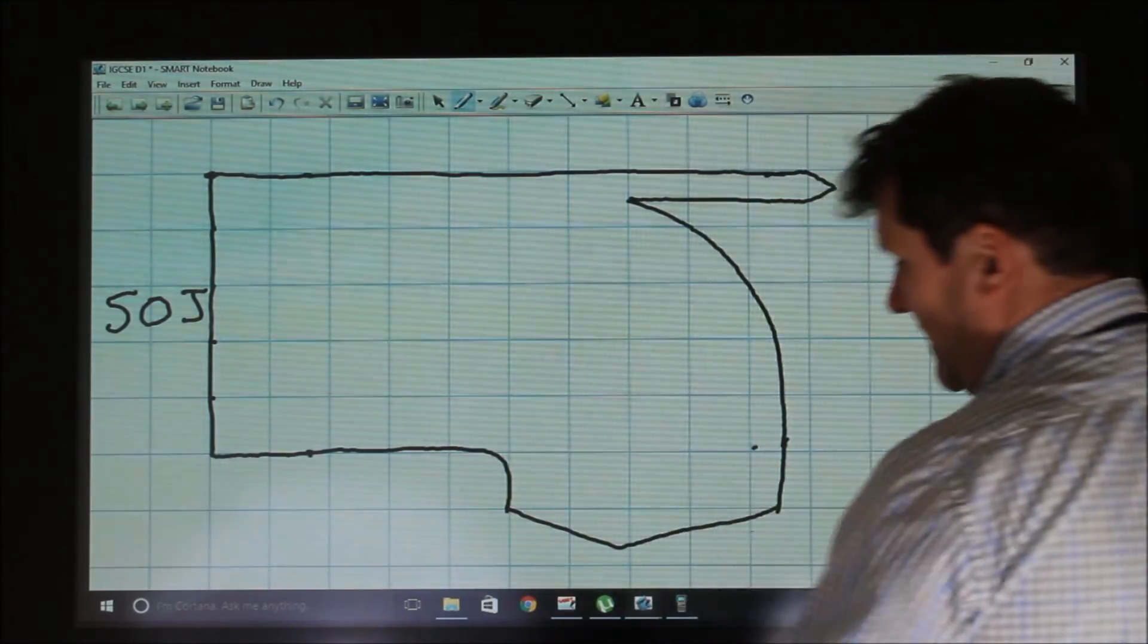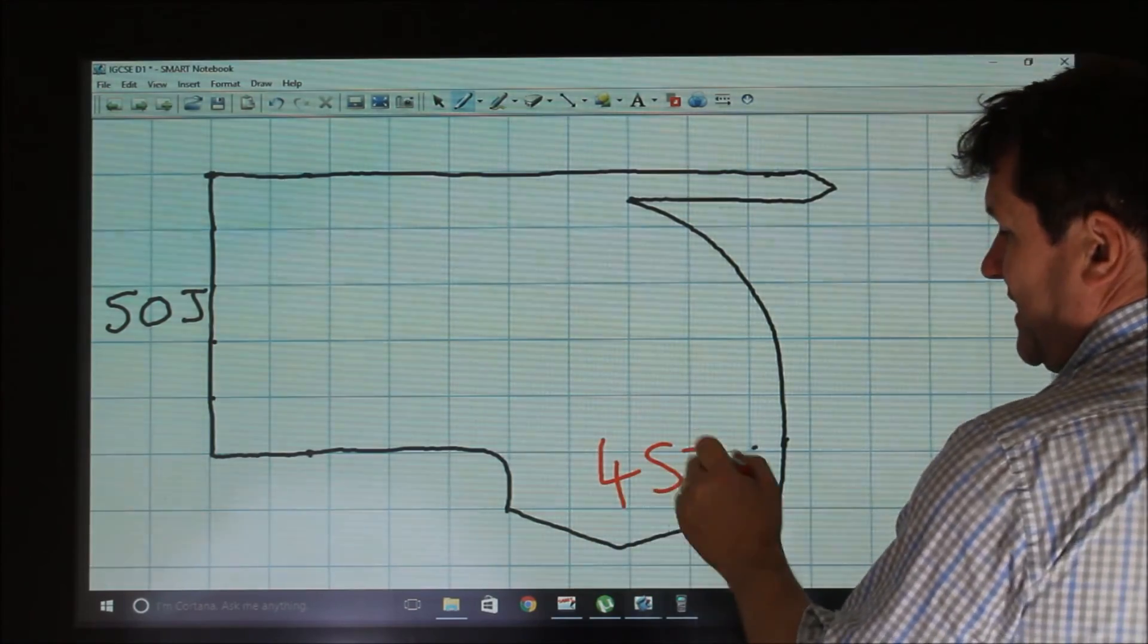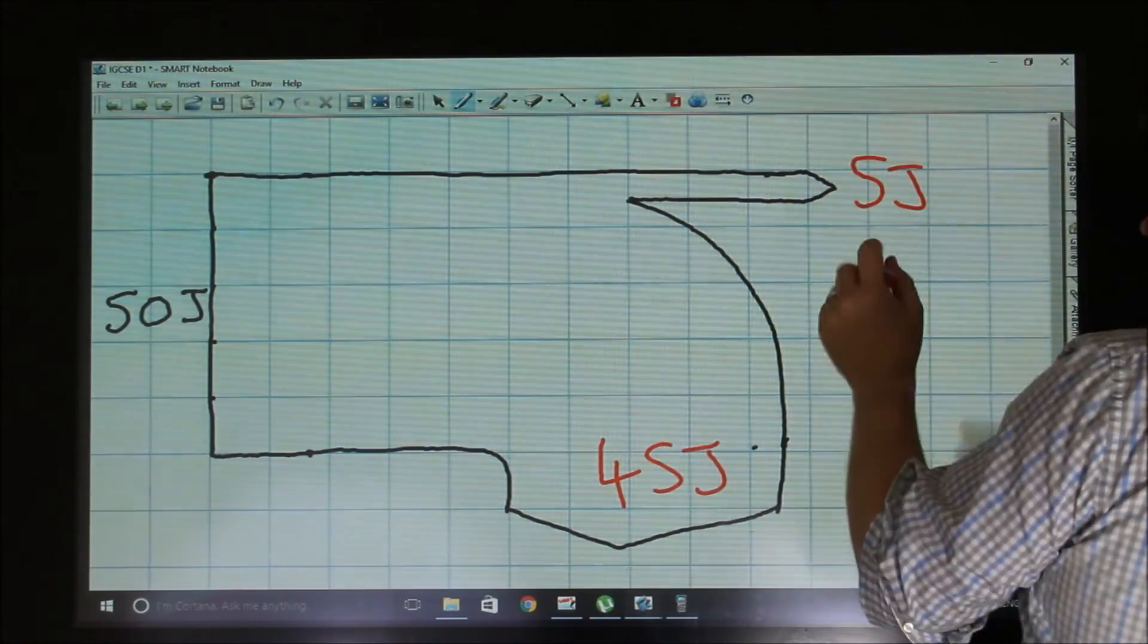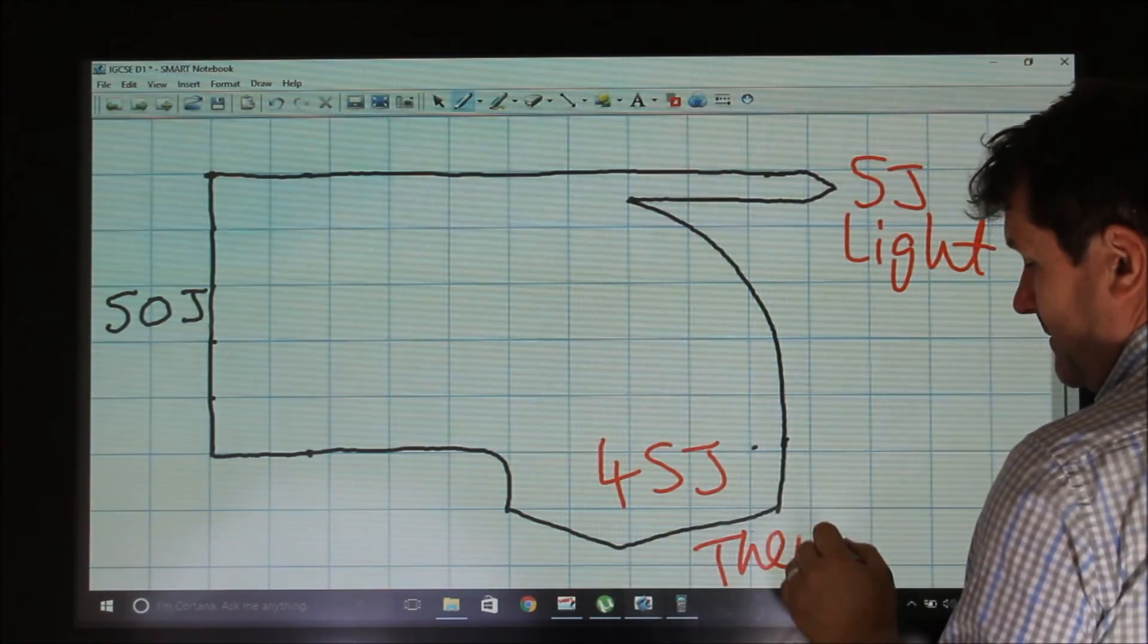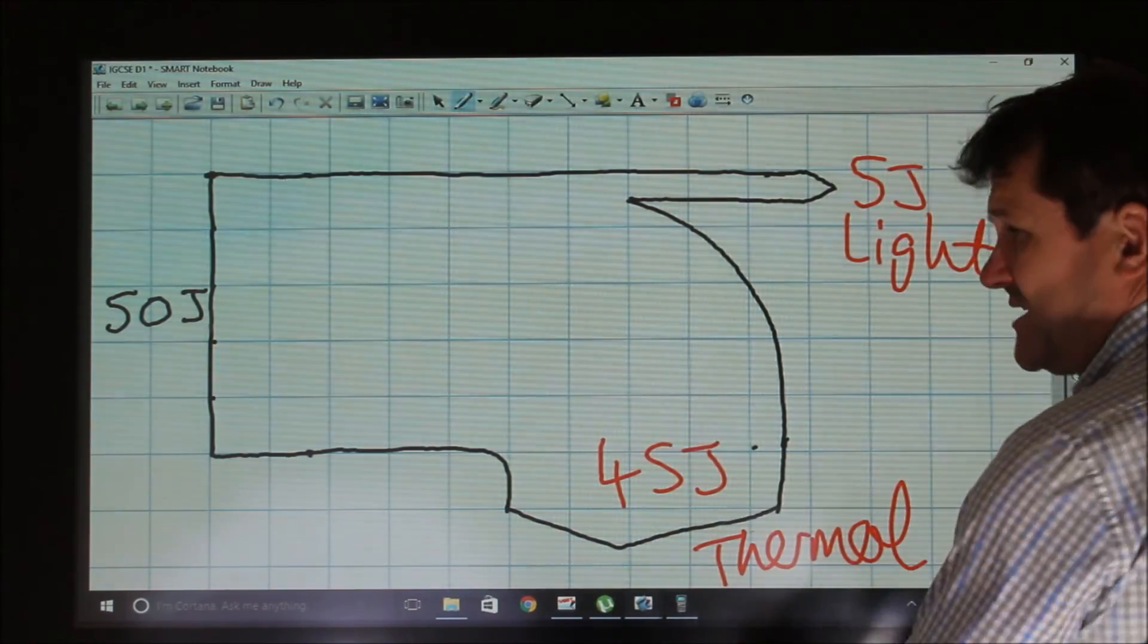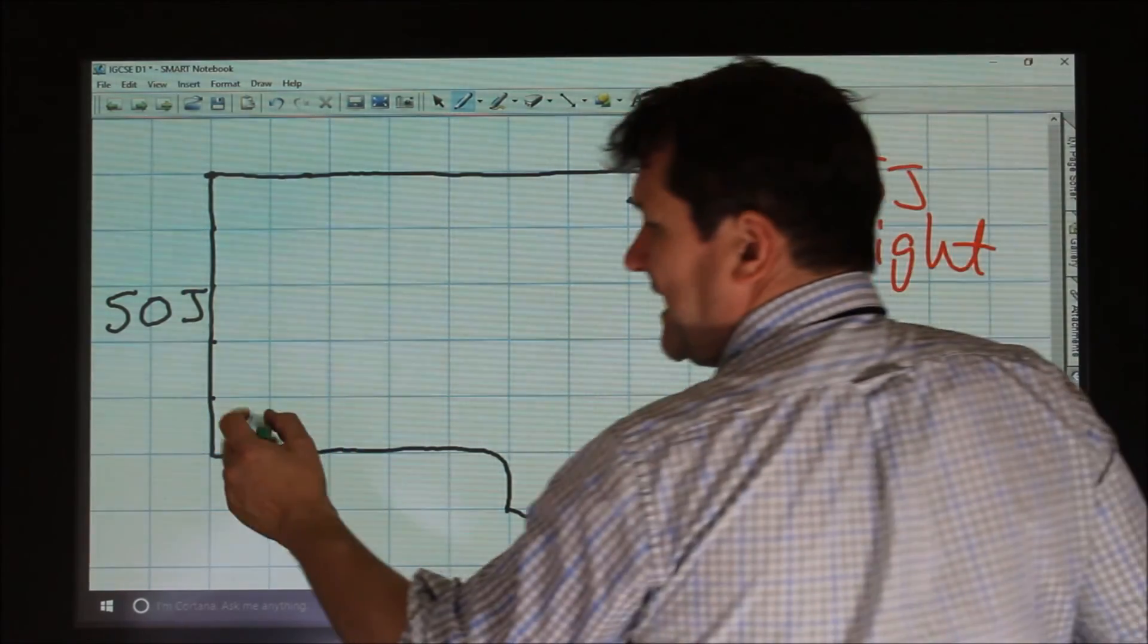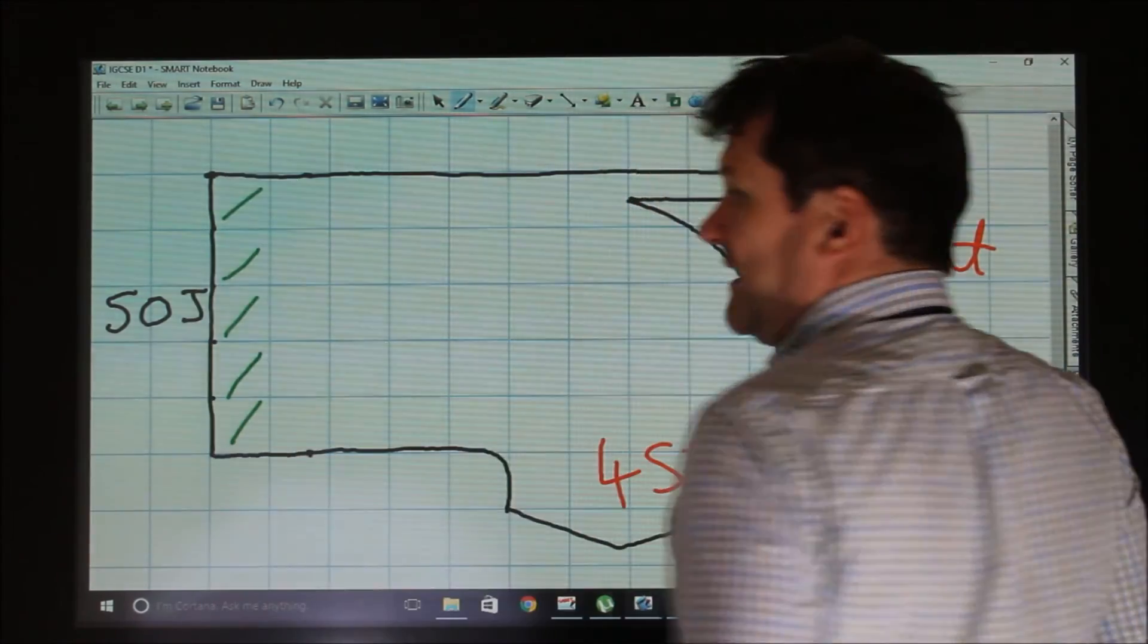all the energy here is wasted. Now it's important to remember, this is 45 joules, and this is just 5 joules, this is light, and this is thermal. But what's really important in this Sankey diagram is, at the beginning, 5 squares.